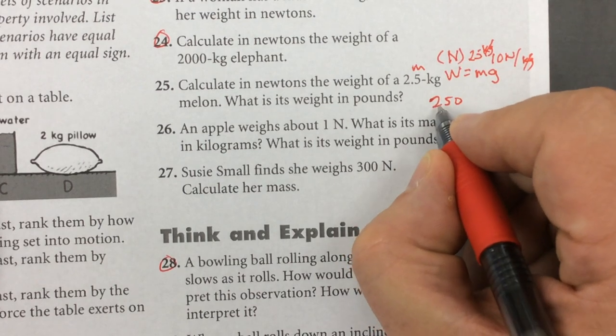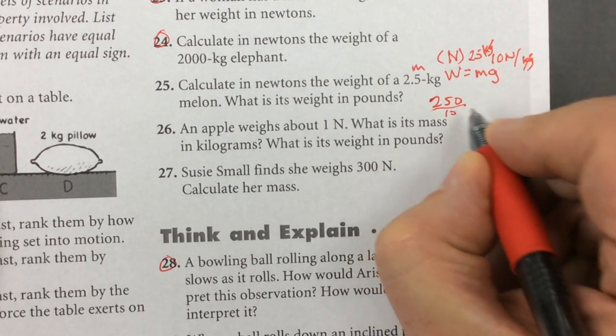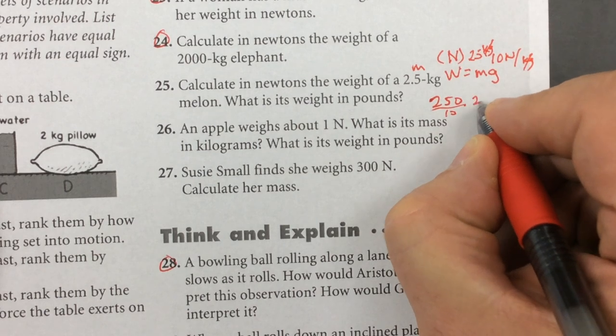So to get back to kilograms, you have to divide by gravity, so that's going to be 10 dividing, so that's going to give you 25.